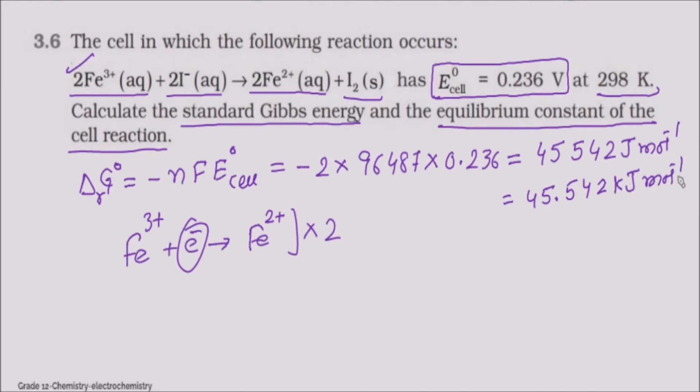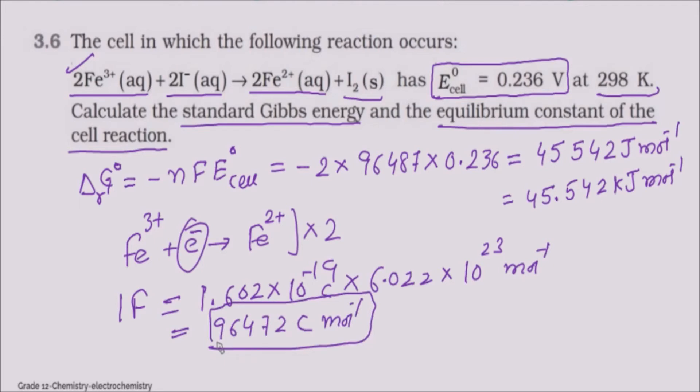The Faraday constant value, that is equal to 1.602 into 10 raised power minus 19 into 6.022 into 10 raised power 23. 1.602 into 6.022 gives 96,472 for NCERT, and 96,487.